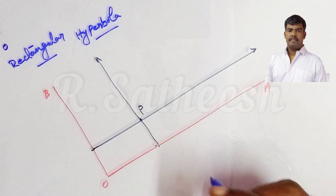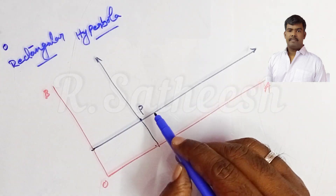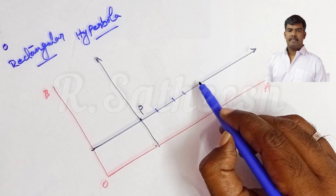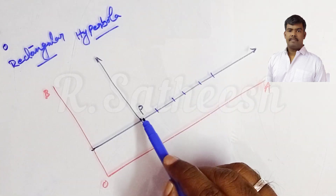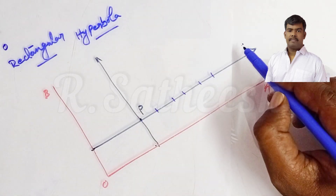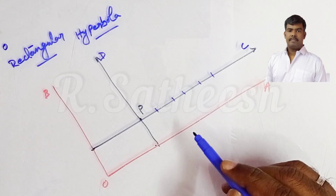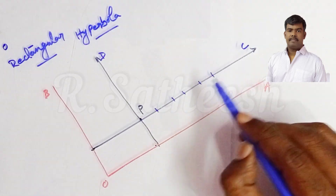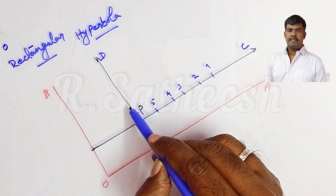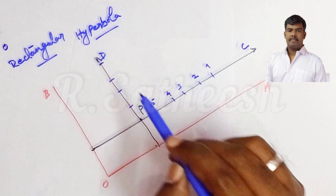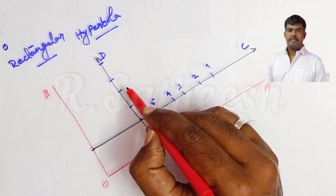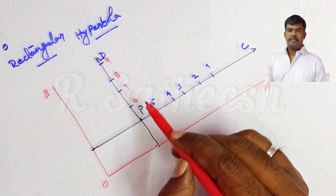To construct the hyperbola, from point P towards the right side, mark some number of points — either at equal or unequal distances. Similarly mark points to the left of P. For example, consider points C and D on either side of P. From P to C, mark points and assign them as 1, 2, 3, 4, 5. From P to D, mark points and assign them as 6, 7, 8, 9 — labeled with dashes for convenience.